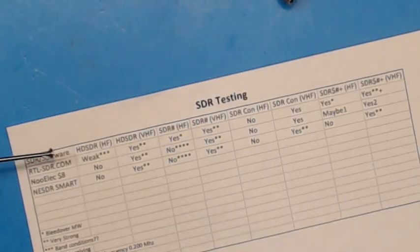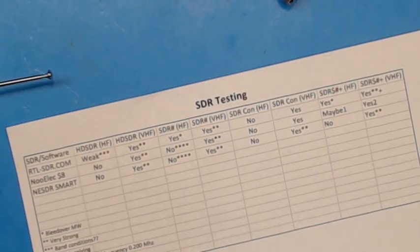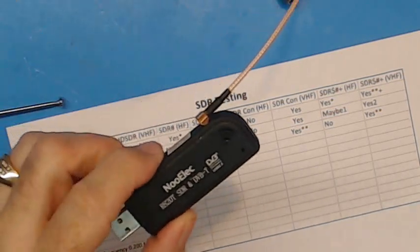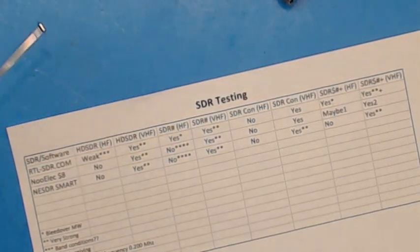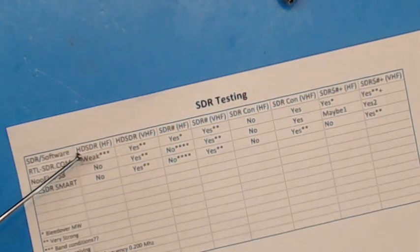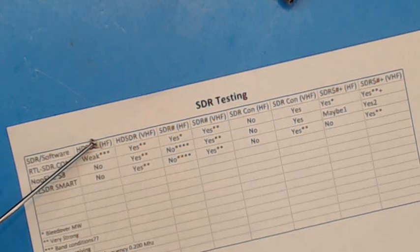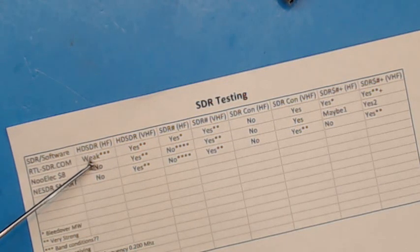Then we tried the NoahElect $8 one. This is what they are now. And under HD-SDR, shortwave, high frequency, nothing. Didn't receive anything.